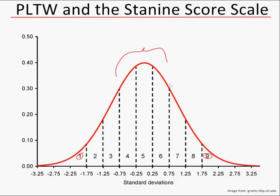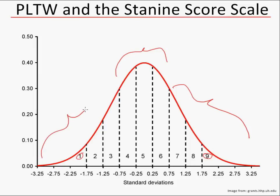You have a very large percentage of students in the average group — the 4s, 5s, and 6s. You're going to have a smaller percentage of students in the above average group, that's the 7s, 8s, and 9s. And then you're going to have about the same number in the below average group, the 1s, 2s, and 3s.